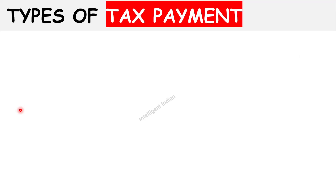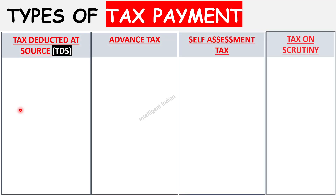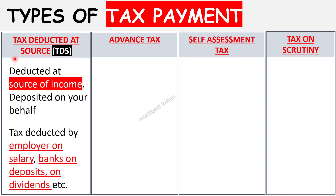Before we understand the various types of interest on late payment of tax, we need to understand the different types of tax payment. We have four types. First is Tax Deducted at Source, or TDS. TDS is known to most of you — most of you are salaried. You work for a company, the company deducts some amount of tax while paying your salary and deposits it to the income tax department on your behalf. Similarly, banks also cut TDS on interest from deposits. That is called TDS or Tax Deducted at Source.